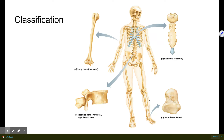Next are flat bones. They're called flat bones because they're flat and usually thin and curved. The sternum — your breast bone — is an example, as are the shoulder blades, the ribs, and the skull bones. Most of these flat bones contain the majority of the red marrow in your body, so most red blood cell production happens in these flat bones.